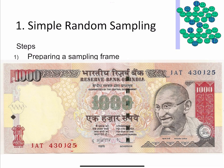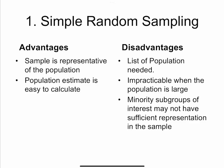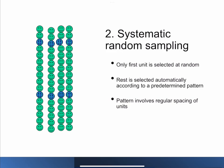In the currency method, you randomly take a currency note and note down the numbers — if your desired sample size fits within two digits, you look at the last two numbers. In the random number table method, you point a pin or throw a dice onto the table; wherever it lands, you select that number, and if you want a three-digit number you take the digits following the pointed number. Advantages of simple random sampling: the sample is more representative of the population and population estimates are easy to calculate. Disadvantages: you need the list of the entire population, it is impracticable when the population is large, and minority subgroups may not have sufficient representation.